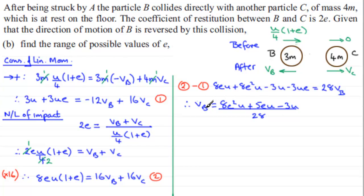Now VB has got to be a positive quantity. I know it's to the left, but we've taken into account that it was in the negative sense. The actual magnitude of VB is going to be positive, so this quantity must be greater than 0, which means the numerator has to be greater than 0. Dividing through by U, we have 8E squared plus 5E minus 3 must be greater than 0.